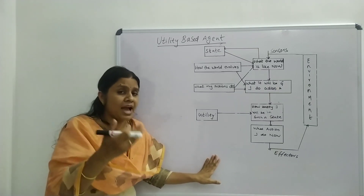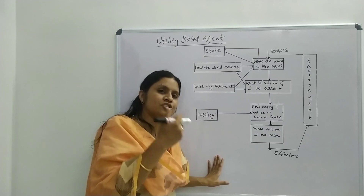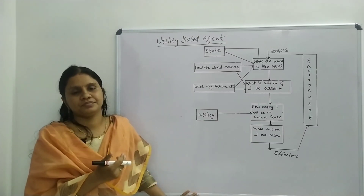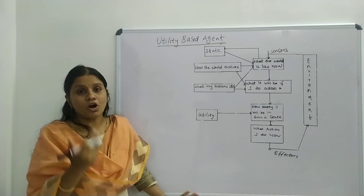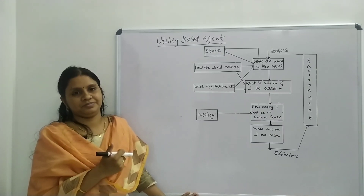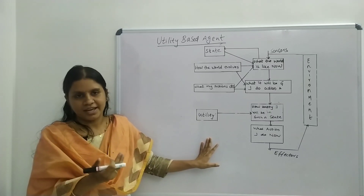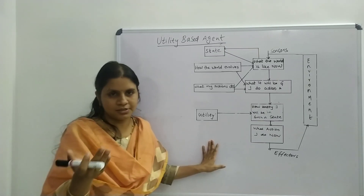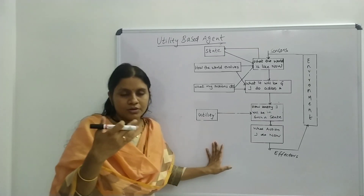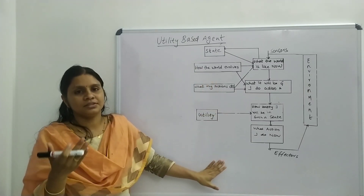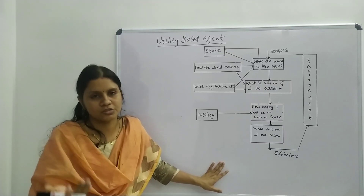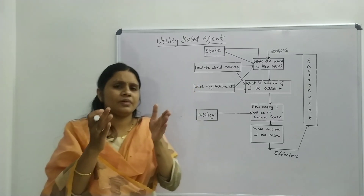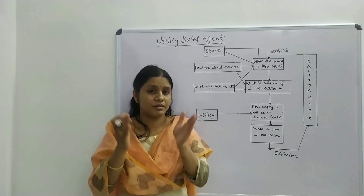The agent will be having a set of possible alternatives and will have to choose the best possible action which will make the agent happy. In a goal based agent, we just select the best possible option to achieve our goal — we do not consider the agent's happiness. But in a utility based agent, the agent's happiness is the most important. The utility based agent makes rational — meaning right — decisions.